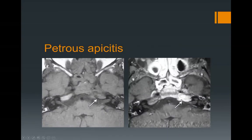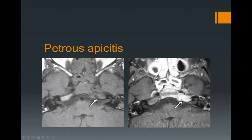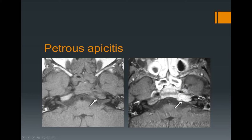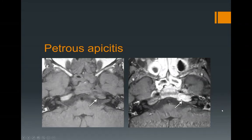When you have petrous air cells, you can get petrous apicitis. Here you see abnormal T1 signal intensity compared to the opposite side, with enhancement on post-contrast images, dural involvement, and involvement of Meckel's cave and cavernous sinus on the left side. These patients may present with a sixth-nerve palsy — that would be Gradenigo syndrome. With extension into Meckel's cave, patients could also present with fifth-nerve symptoms, and even seventh-nerve symptoms due to the facial nerve traveling on the floor of the middle cranial fossa.